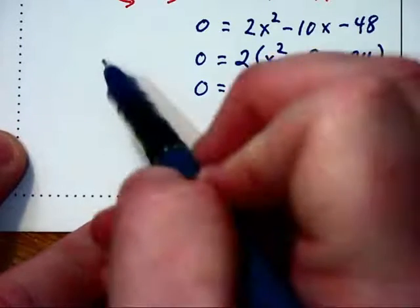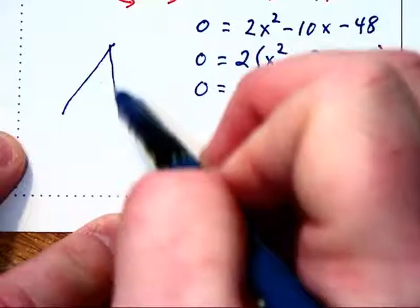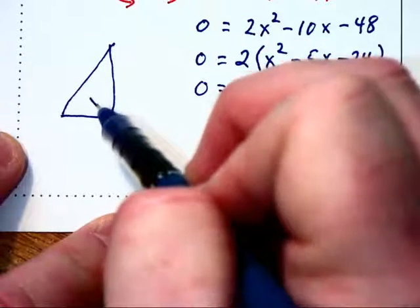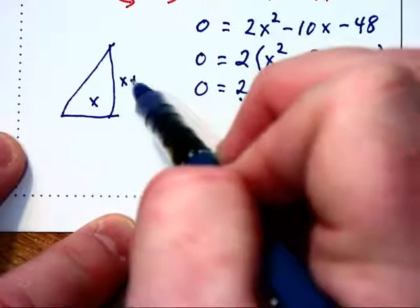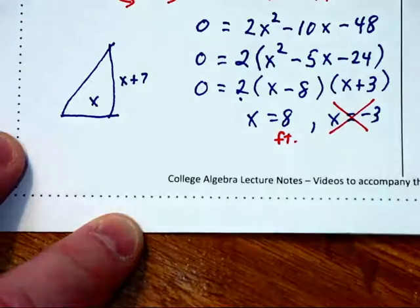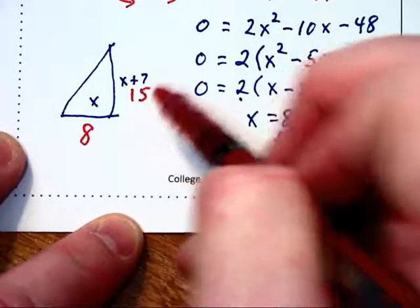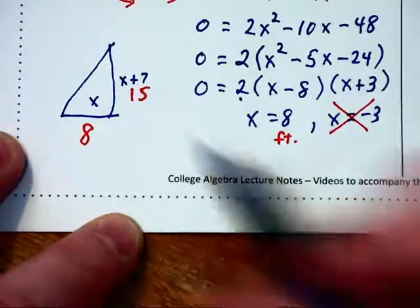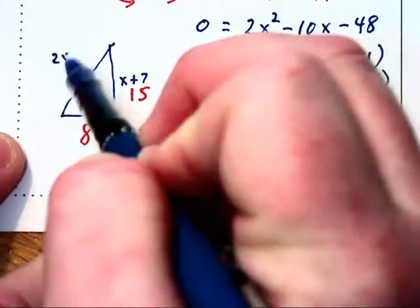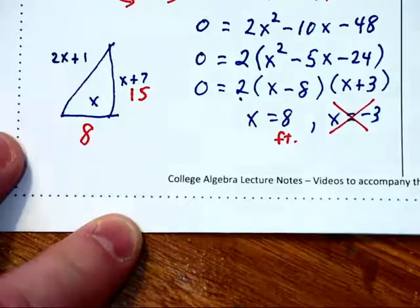So if we go back and find all three sides of this triangle, we had x and x plus 7. Those will be replaced with 8 and 8 plus 7, which is 15. And then the hypotenuse was 2x plus 1.